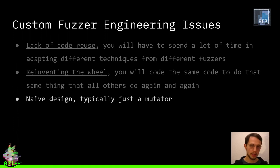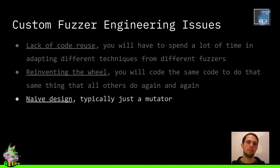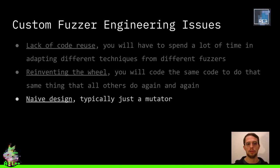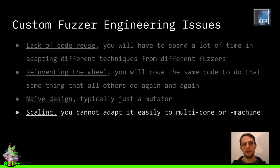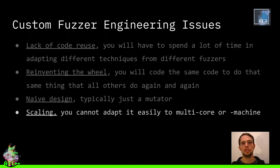Getting to the point of specialization and to a performance level of something like AFL, AFL++, or Honggfuzz takes a lot of engineering effort. For a weird target, you are not going to put that much effort into it. And lastly, you will not be able to just take your one-core fuzzer and scale it to many cores and many machines with ease without even more additional engineering.